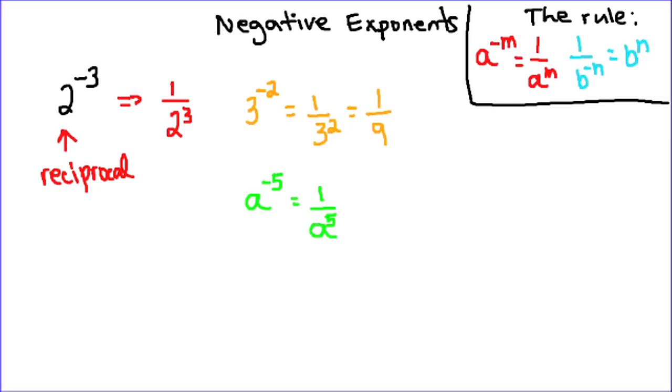As I said, it also works in two directions. So we might have something like 1 over b to the power of negative 4. Well the reciprocal of 1 over b is b, and the opposite of negative 4 is positive 4.